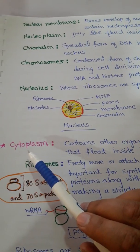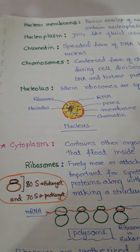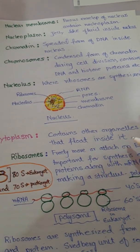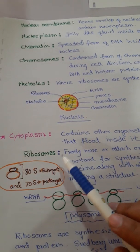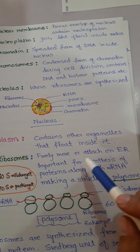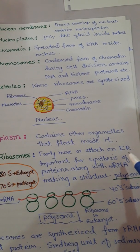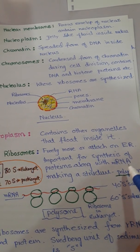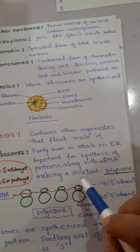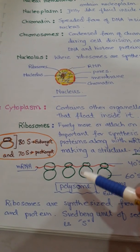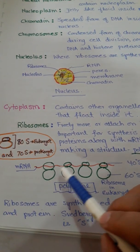All other organelles are present inside the cytoplasm, which contains organelles that float inside it. Ribosomes freely move or are attached to the endoplasmic reticulum. They are important for the synthesis of proteins, working along with mRNA (messenger RNA) to form a structure called a polysome.